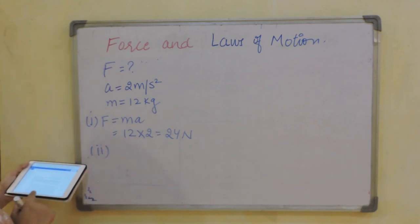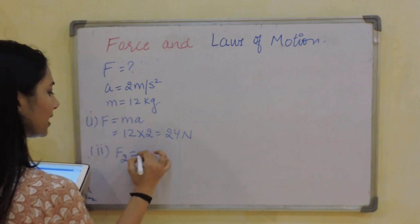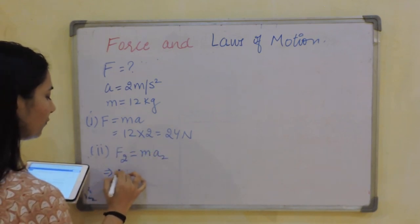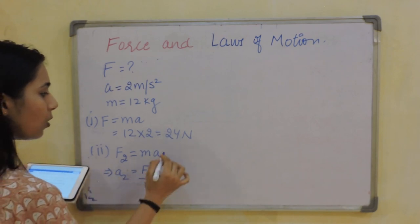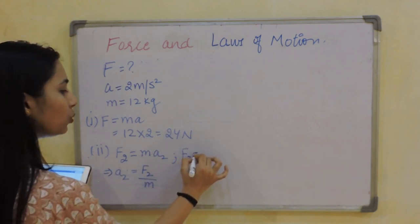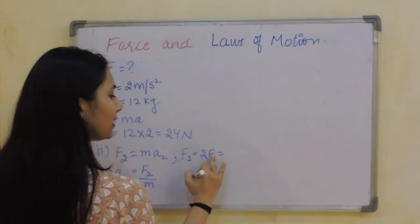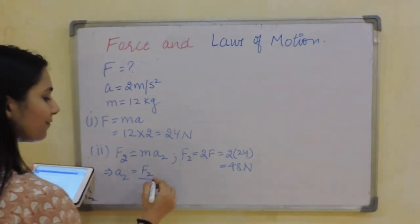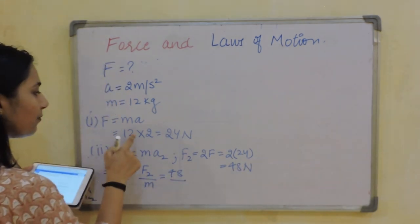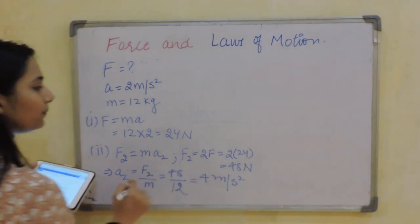The second part asks: what would be the acceleration if the force were doubled? F2 equals M times A2, so A2 equals F2 divided by M. F2 is twice F1 — twice of 24 is 48 Newton. So A2 equals 48 divided by 12, giving 4 m/s². That is the solution.